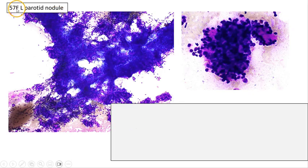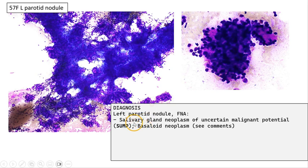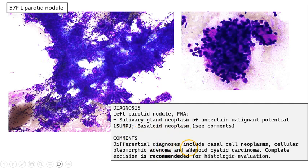Here is an example of a 57-year-old lady with a left parotid nodule. And we can see that this is actually a basaloid lesion with very minimal stroma. And this would fall into the SUMP category for salivary gland FNAs, basaloid neoplasm. And the recommendation is more strongly worded. Complete excision is recommended for histologic evaluation rather than may be considered or if clinically indicated.